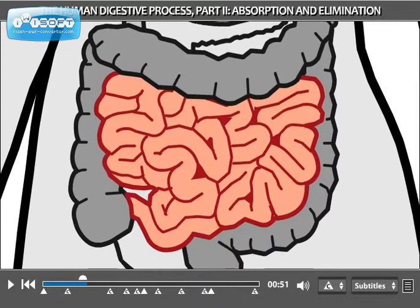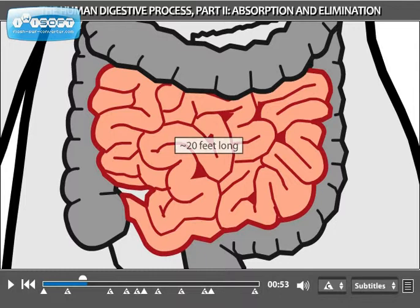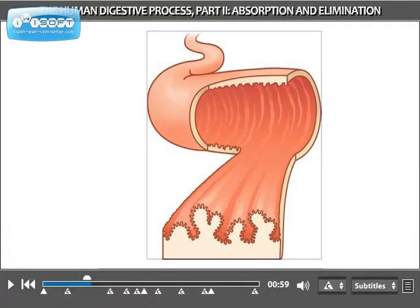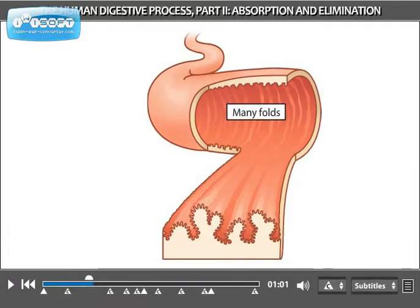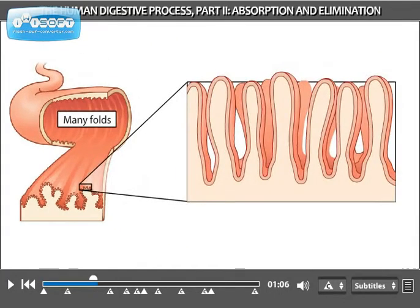First, the small intestine is long — about 20 feet long. Second, rather than being a straight, smooth tube, the small intestine has many folds. Third, the interior lining of the small intestine is made up of thousands of small, finger-like projections called villi. These create lots of nooks and crannies where chyme can come into contact with absorptive cells.